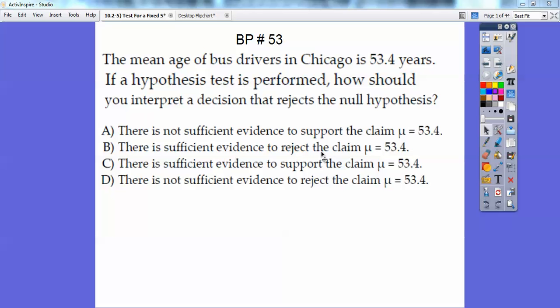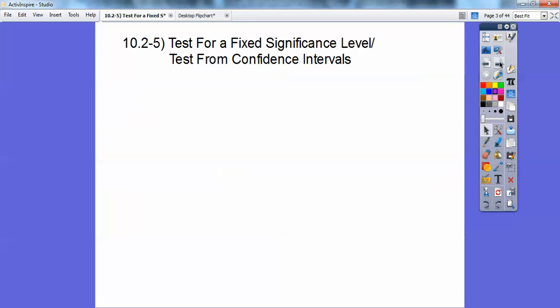There is sufficient evidence to reject the claim that your population mean is equal to 53.4, and that's the one that we want, you guys, not the one that's not sufficient. We want to have sufficient evidence to reject that claim, and you'll see some more examples in this lesson as well. All right, so the answer is B.